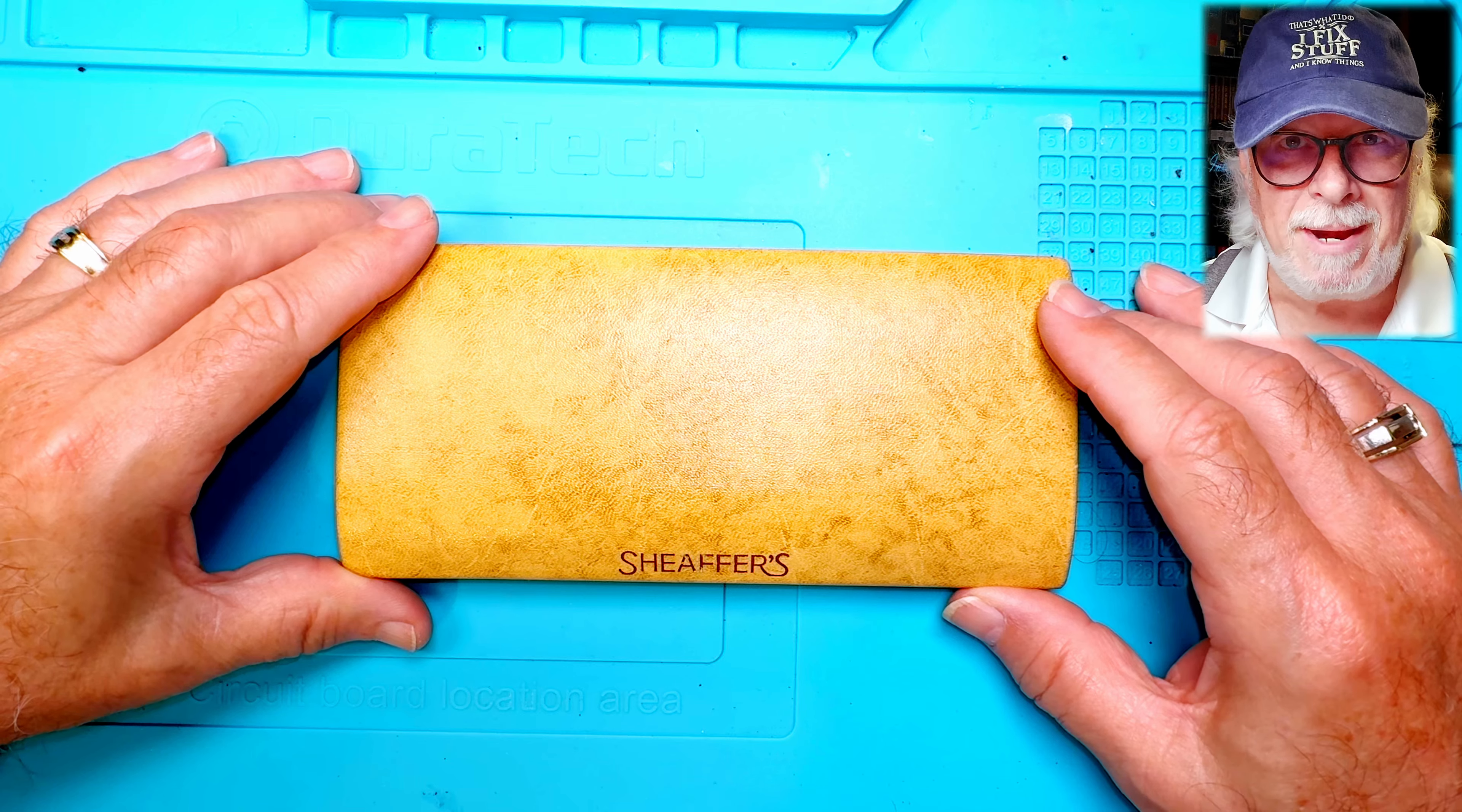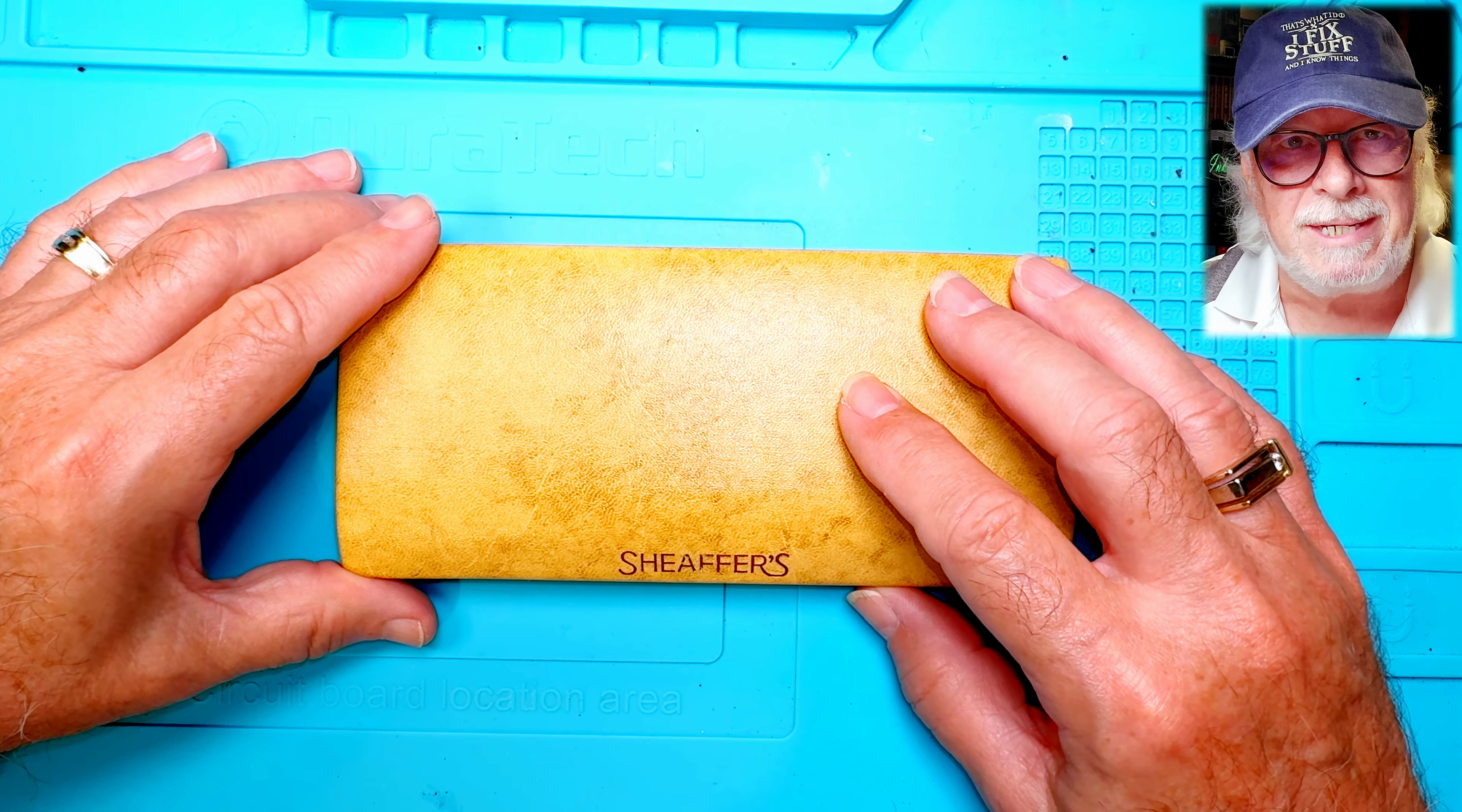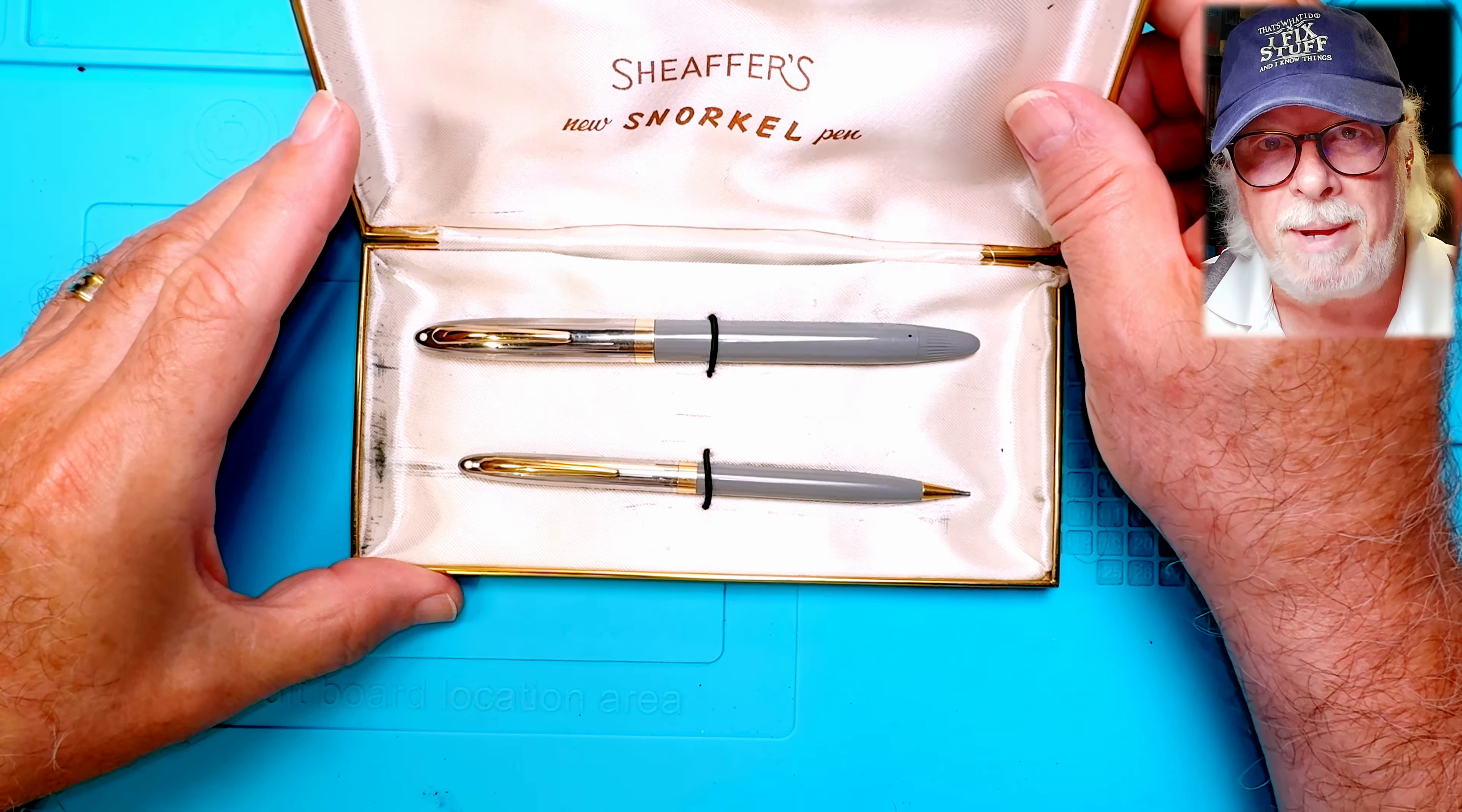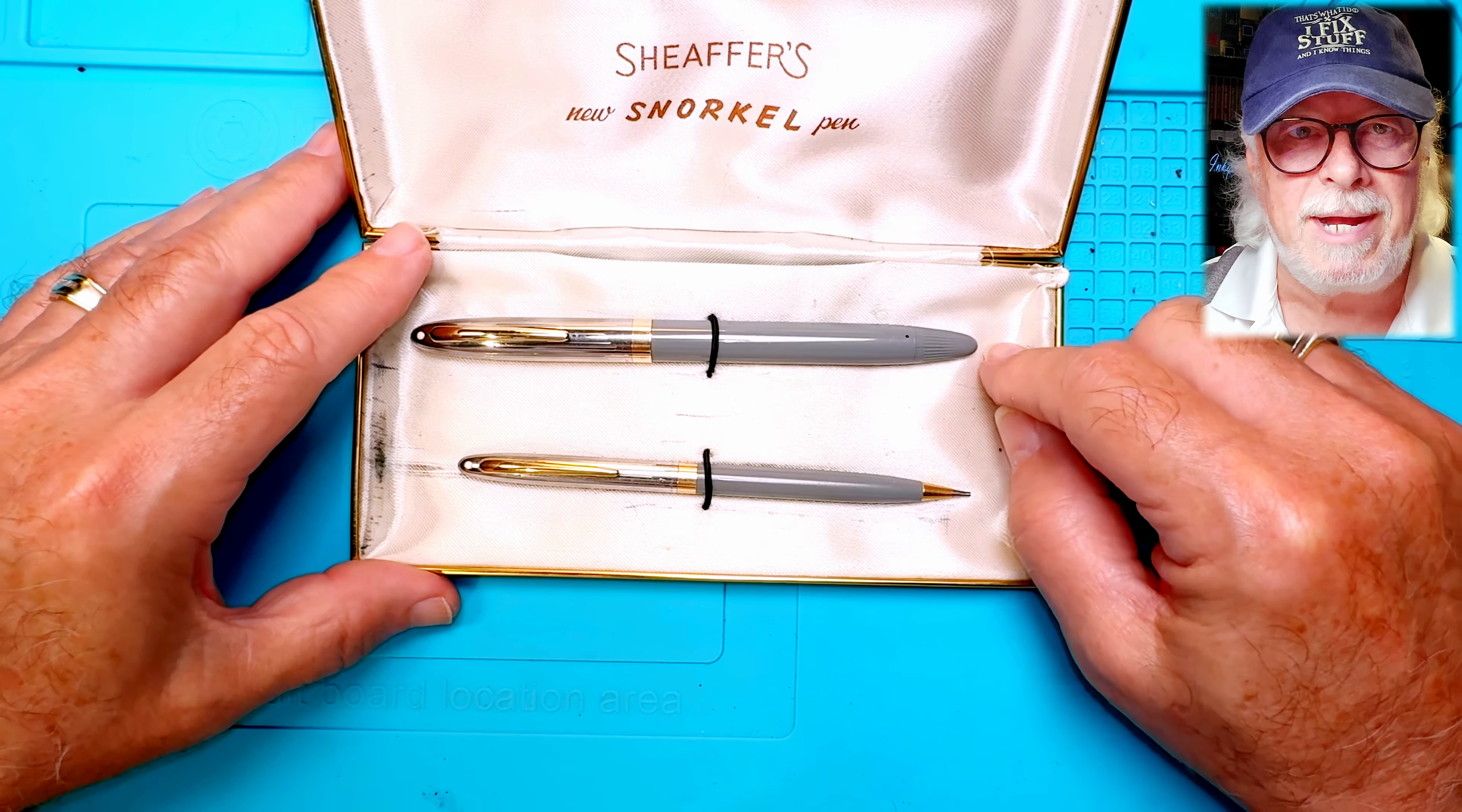Welcome back to Inquiring Minds. My name is Doug and thanks for joining me for another Pen Resurrection Sunday. Last Sunday I showed you a bag of pens and the piece of resistance was this 1955 to 1959 Schaefer Thin Model Clipper Snorkel Fountain Pen and Pencil Set. Janice picked it up at a flea market for next to nothing and I was really excited to get the pen working again.